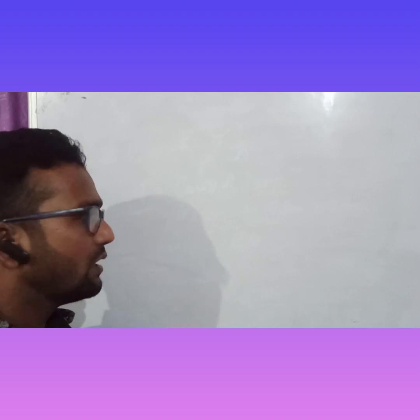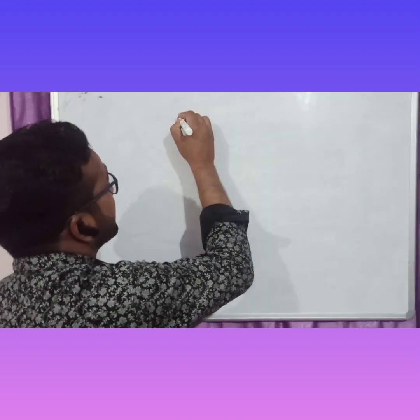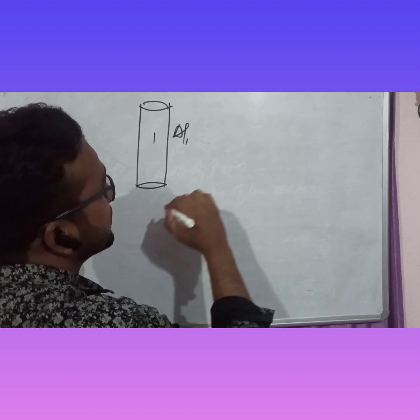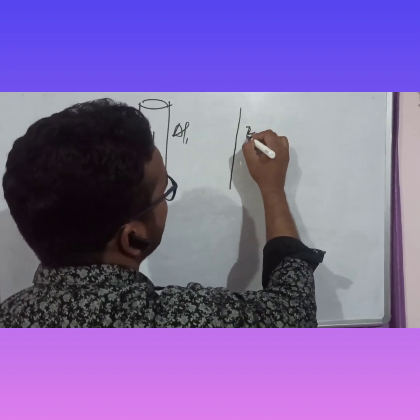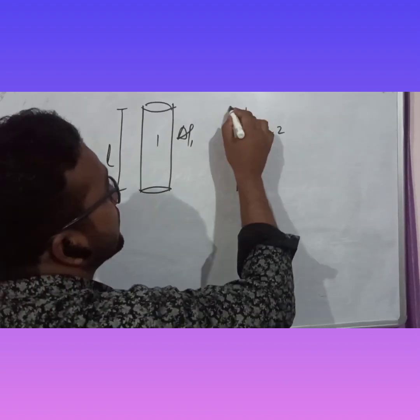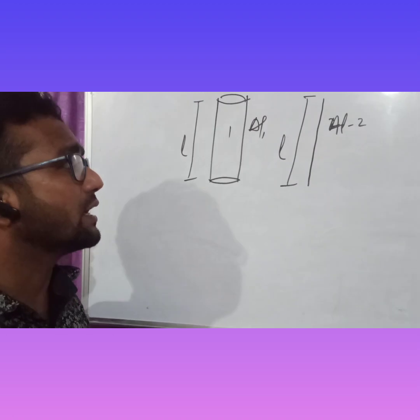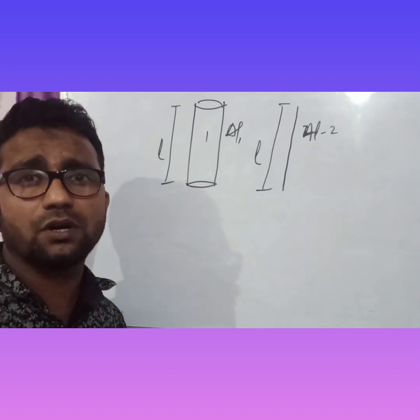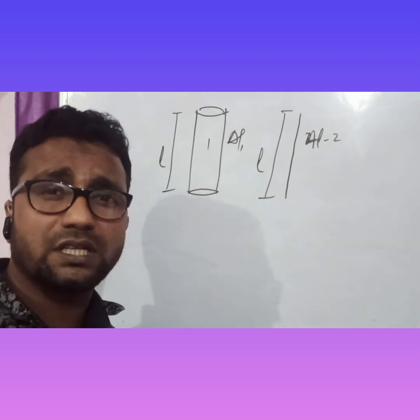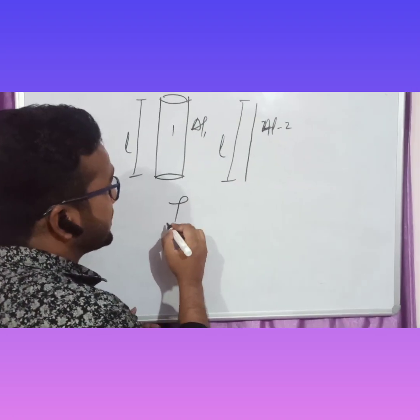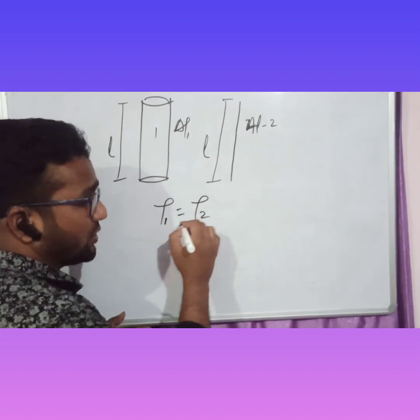Now we can see some conceptual examples of resistivity and resistance. Suppose we have two materials: aluminium one and aluminium two. Both are aluminium but aluminium two is thinner. The length of both is the same, L. Since both are the same material (aluminium), the resistivity of aluminium one equals the resistivity of aluminium two — because resistivity depends on the nature of the material and not on its dimensions.